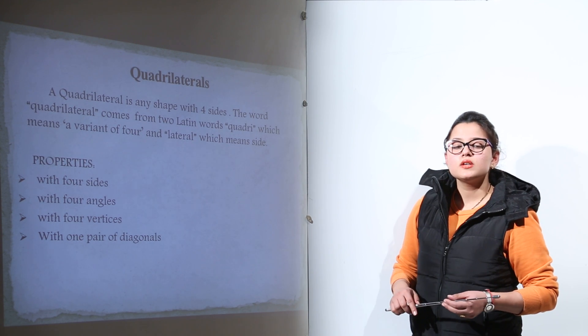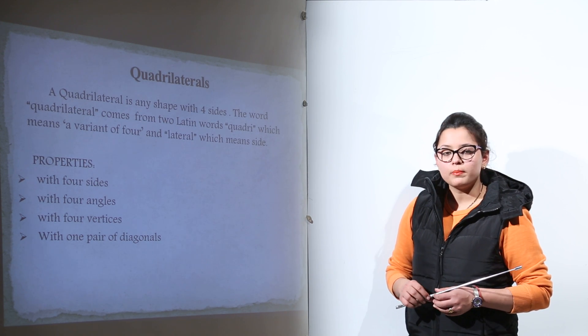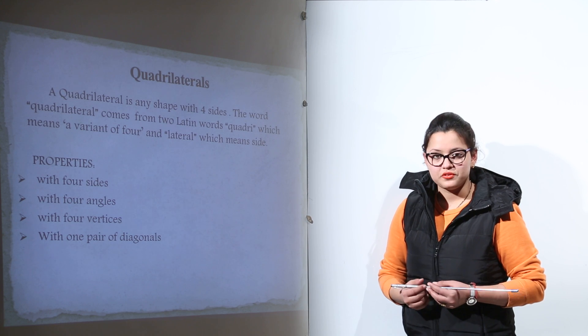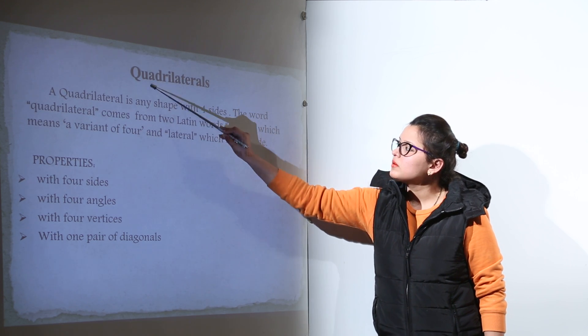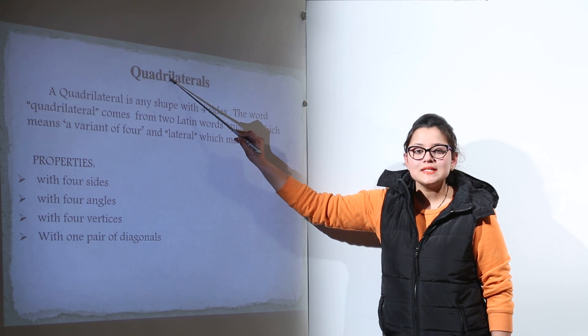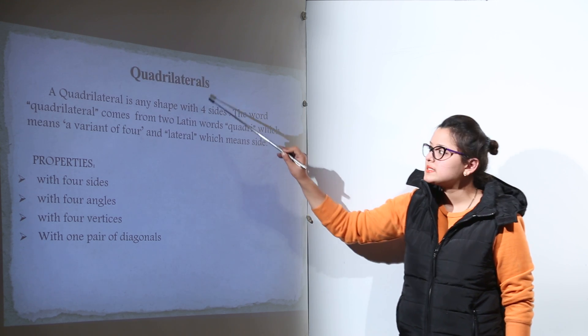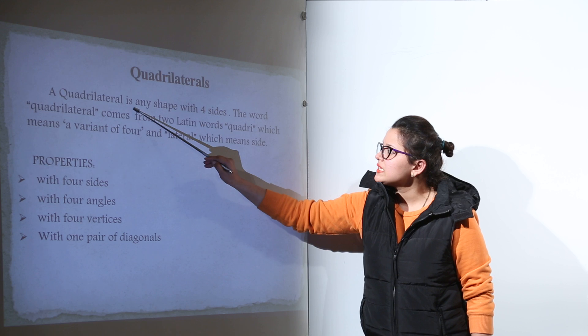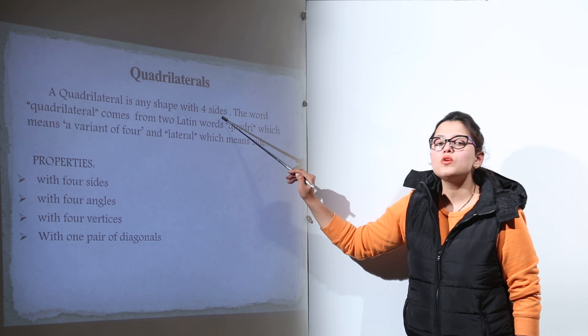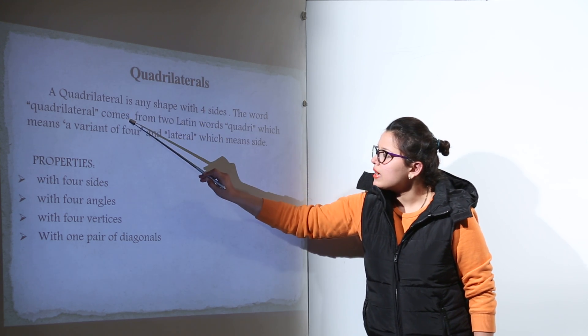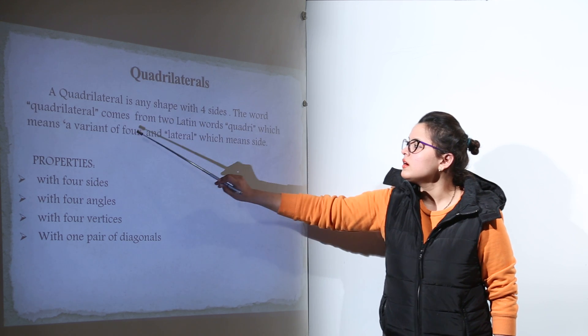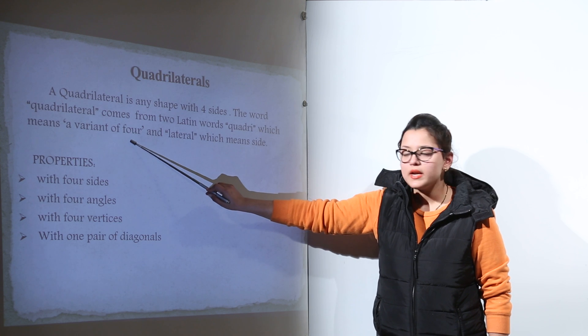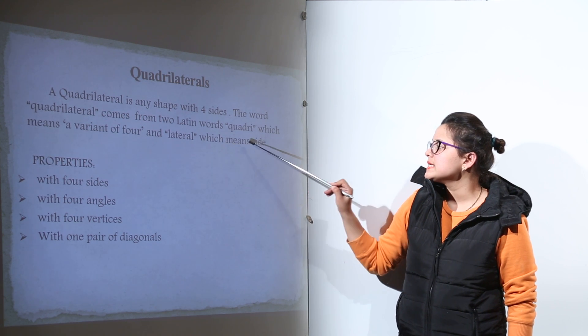We will start with our topic, the quadrilaterals. I have already explained the meaning of this term. Quadri means four and lateral means sides. So, a quadrilateral is any shape with four sides. The word comes from two Latin words: quadri, which means a variant of four, and lateral, which means side.